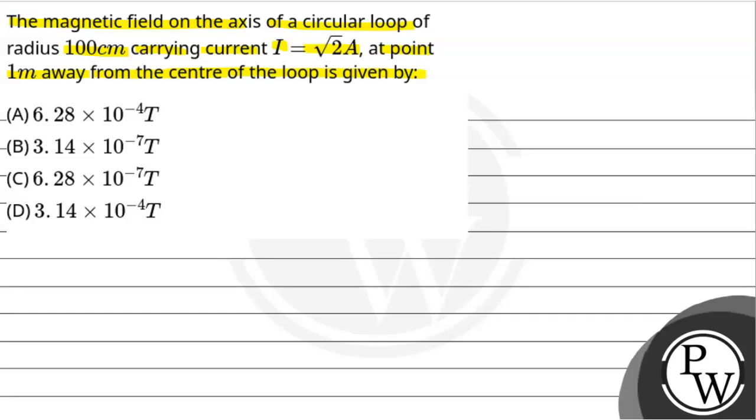Now we are going to talk about the magnetic field on the axis of a circular loop. We are going to take a circular loop. This circular loop has radius 100 cm, we'll call it capital R, and the current flowing through it is I = √2 amperes.